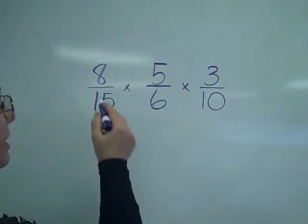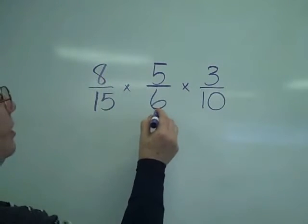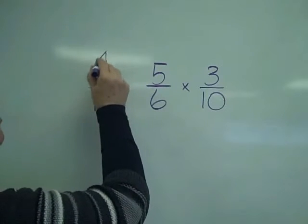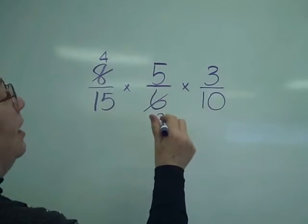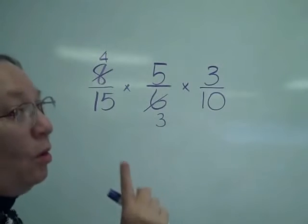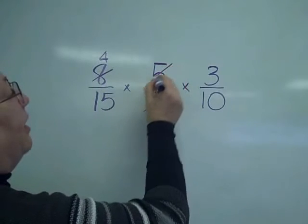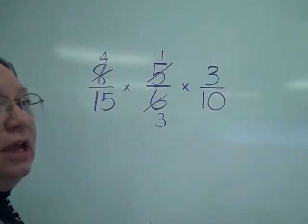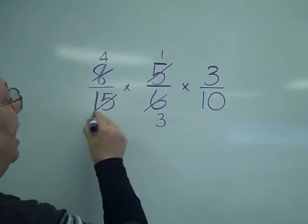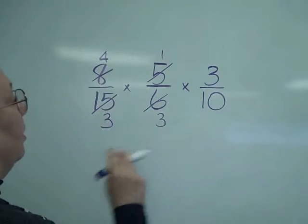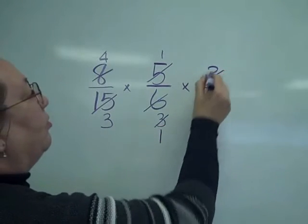Let's just start. I have a tendency to start with the first one — I'm going to take the 2 from the 8 and the 2 from the 6: 2 goes into 8 four times, 2 goes into 6 three times. Now looking at the 5 and the 10, I can use the 5 and the 10 or the 5 and the 15, but I cannot do both — because as soon as I take 5 into 5, I have a 1 left over, not another 5. I'm going to take 5 into the 15 and get a 3. Look at that 3 and the 3: 3 into 3 goes once, 3 into 3 goes once.